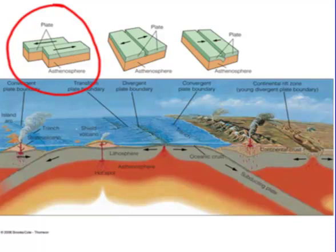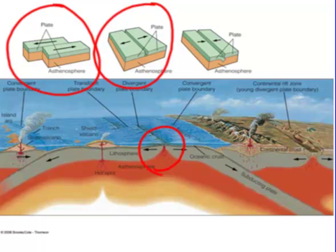Another thing that plates can do is they can pull apart. And this is what happens, for example, at places like the Mid-Atlantic Ridge, where the two plates are pulling apart. This is caused by convection currents in the mantle, which are moving up kind of like boiling water in a kettle, moving in their circular convection pattern, pulling those plates apart.